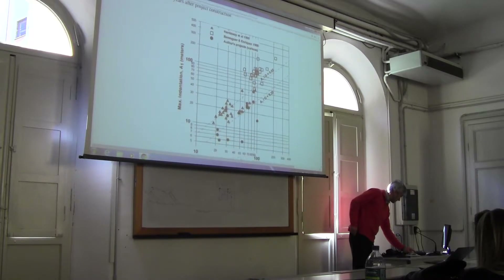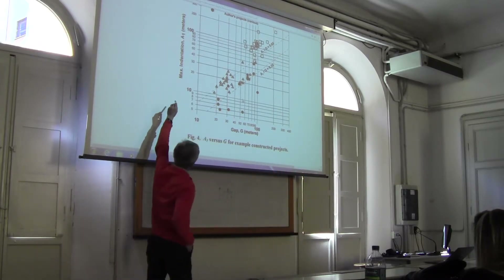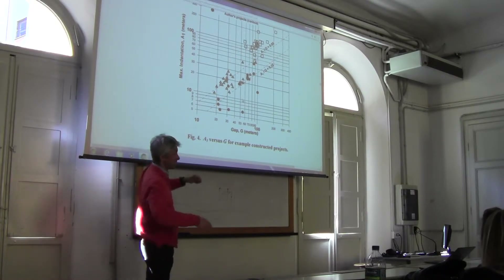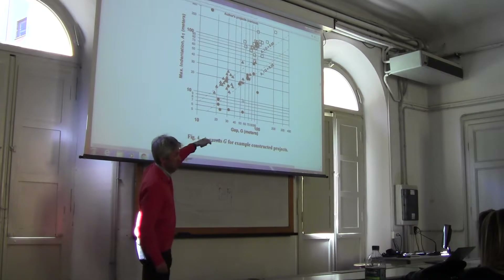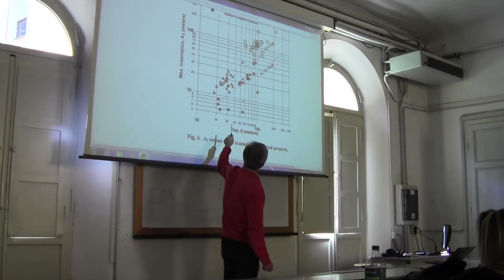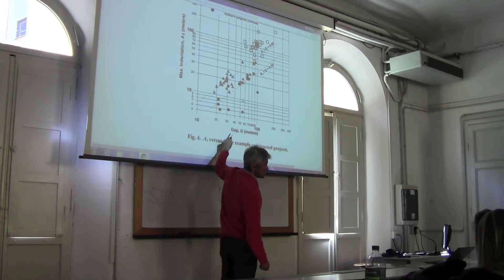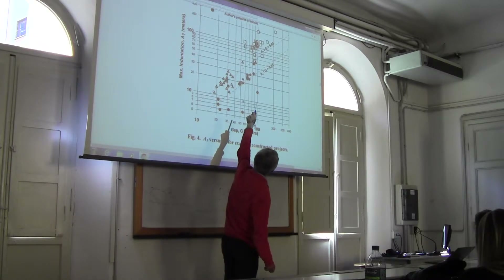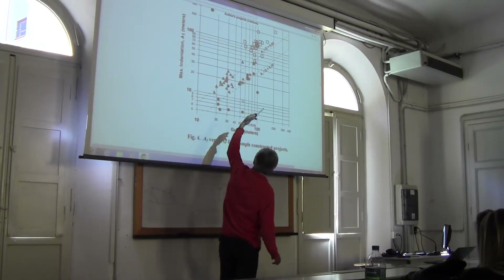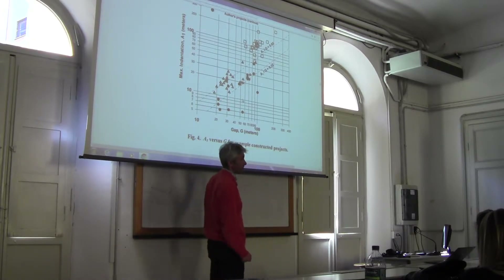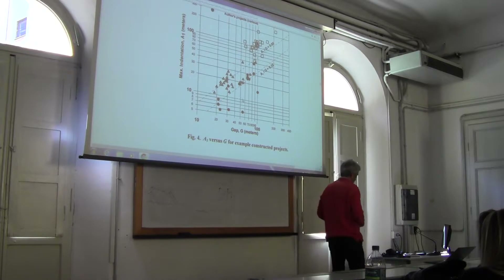A1 is the distance, indicated with the symbol A1, between the seaward end of the groin and the shoreline. A1 is called indentation. This graph shows A1 along one axis and the gap along the other. You can see the line lambda equals one third, because A1 divided by G is a good approximation of lambda. Most of the observations agree with the lambda rule of thumb, so it's an empirical rule but it provides reliable indications.